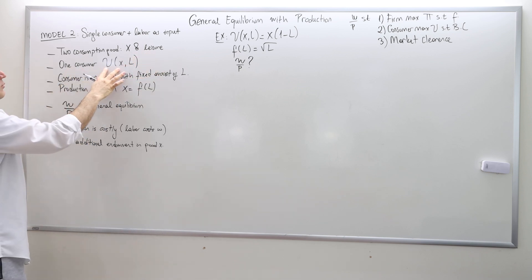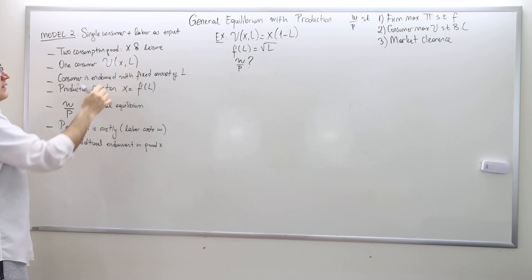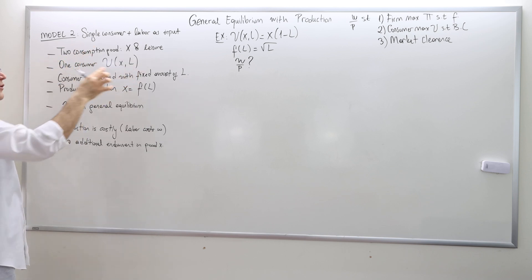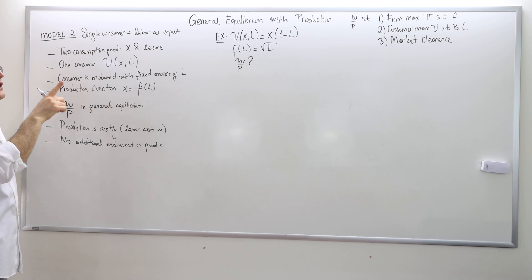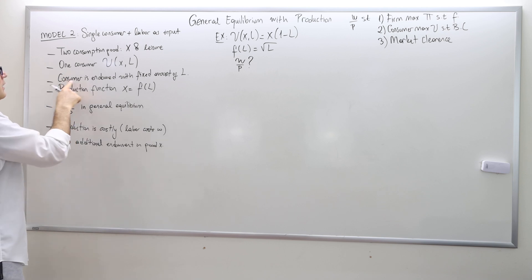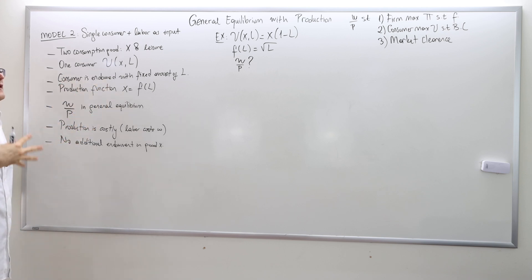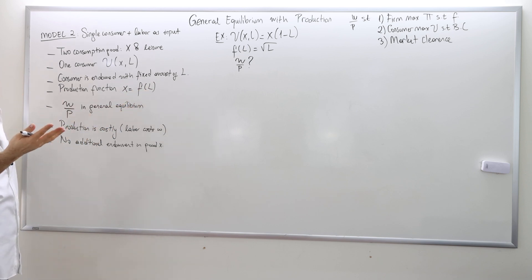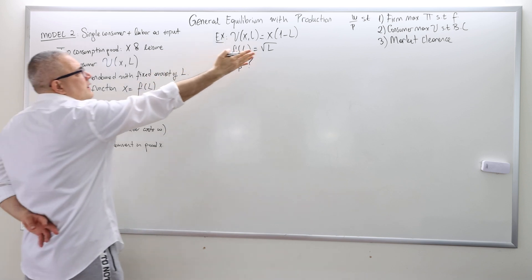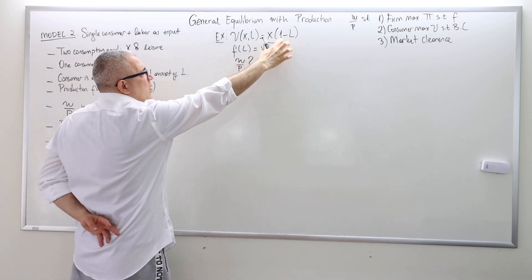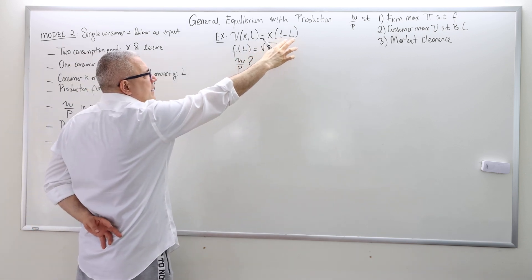We have one consumer with utility function depending on X. So more X is higher utility. Leisure and labor are negatively related, so more labor means less utility. The consumer is endowed with a fixed amount of labor; however, we are going to normalize it to one. In this numerical example, it's also one — so one is the endowment. L is the amount of labor.